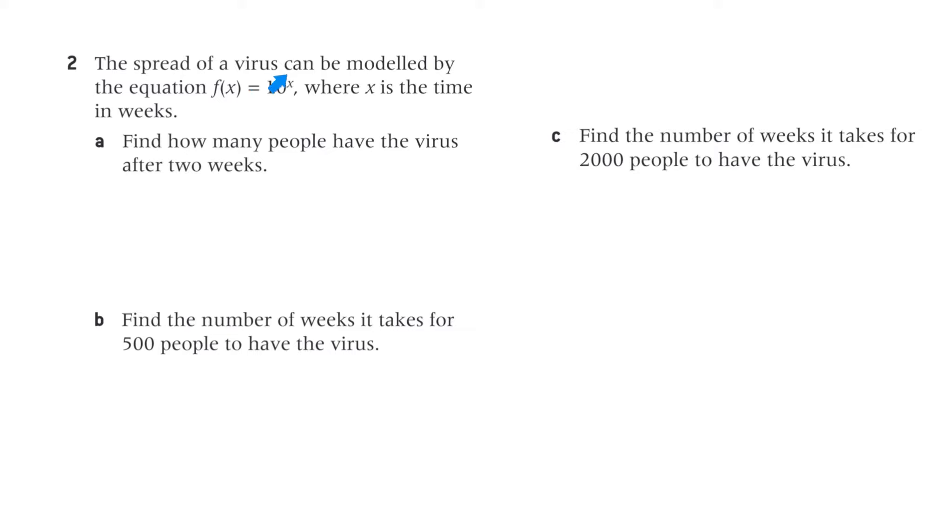Question 2: The spread of a virus can be modelled by the equation, this equation where x is the time in weeks. Find how many people have the virus after 2 weeks. So this function gives us the number of people who have the virus. After 2 weeks, x is 2, so we get 10 squared. That's 100 people.